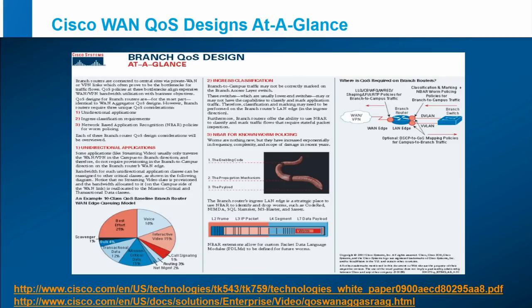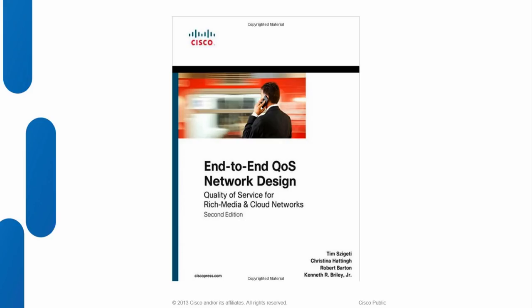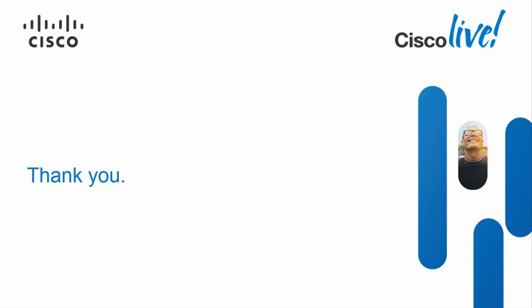That's the WAN QoS design guidance — high level, but the design guide covers it in full detail, around 500 to 600 pages. There's also a new book just published: End-to-End Quality of Service Network Design, a second edition that covers next-gen QoS including the 3850, 5760 from a wireless perspective, SUP 8, and the current and next-gen switching platforms. If you have questions, grab the book and it should answer them.